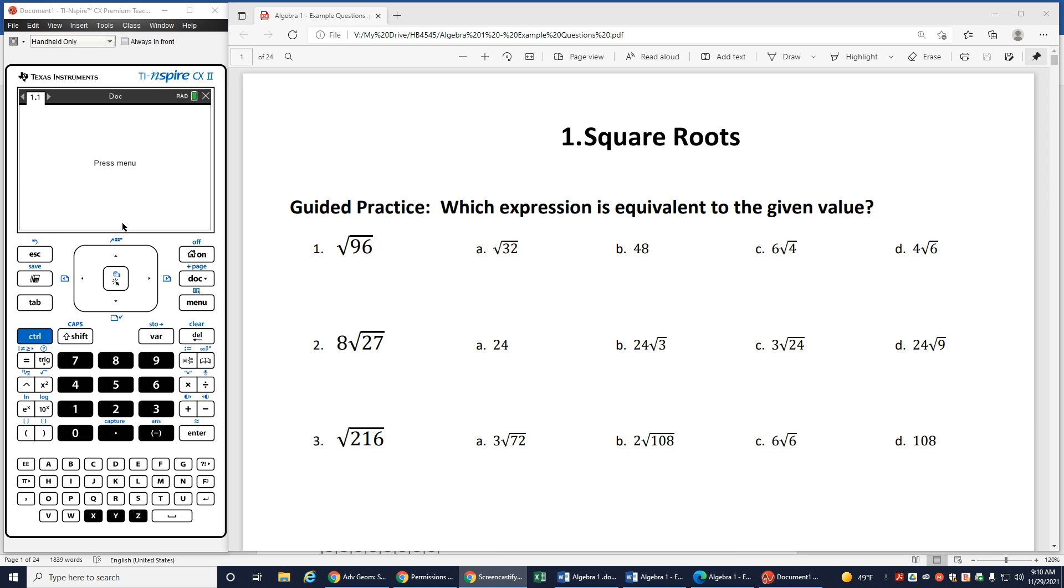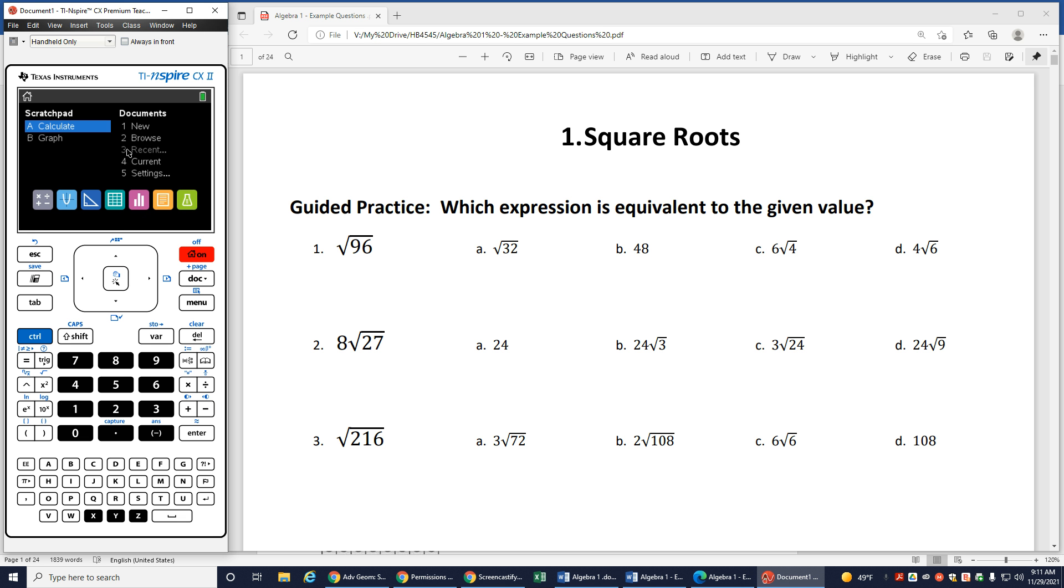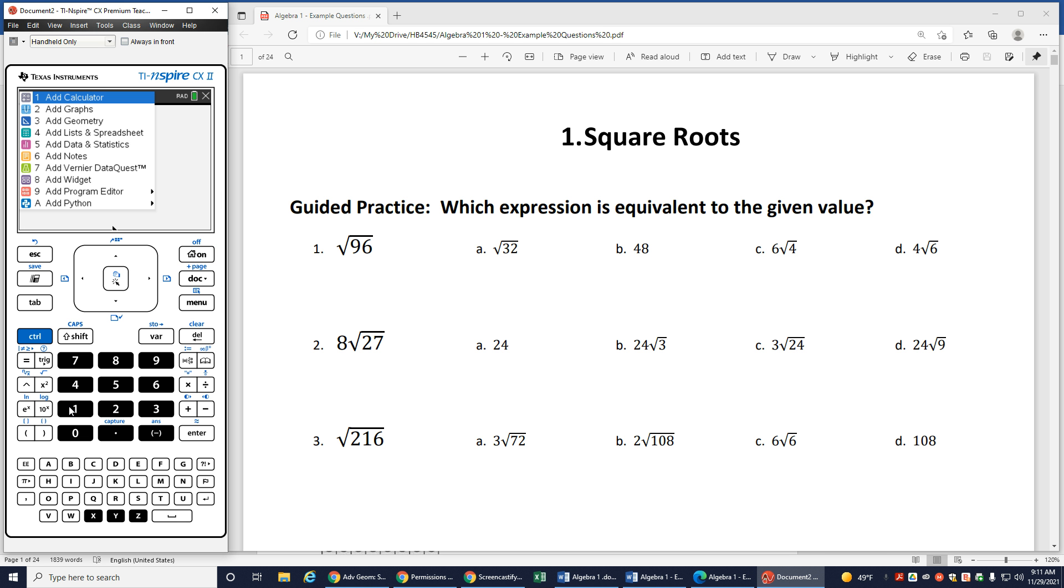So in your INSPIRE calculator, if it tells you to press menu, you might start from the home screen, and you'll just go 1, a new document. If it asks you to save your document, you just say no, we never worry about saving it. We do want to choose 1 for a calculator.